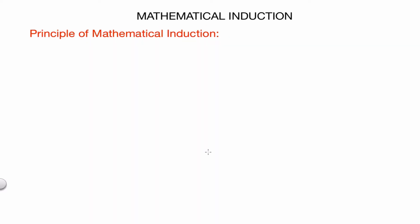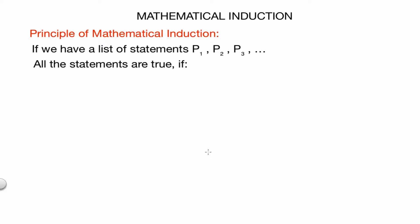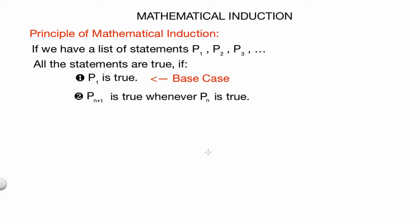This is the idea behind the principle of mathematical induction. The principle states that if we have a list of statements p1, p2, p3, and so on, all the statements are true if two conditions are satisfied. First, if we know that p1 is true — that's what we call the base case. And second, if p(n+1) is true whenever pn is true — that's what we call the induction step. If we can show these two conditions are satisfied, we can prove that a list of statements, even if the list is infinite, are all true without actually having to prove each statement individually.